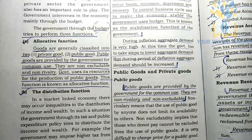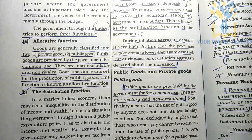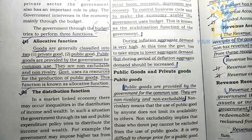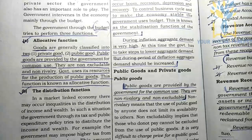The first function is the allocating function. This is when the government provides goods for common use — for example, roads, bridges, etc. These are goods that are available for everyone to use.